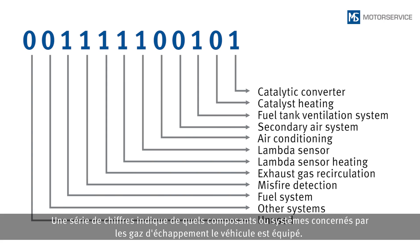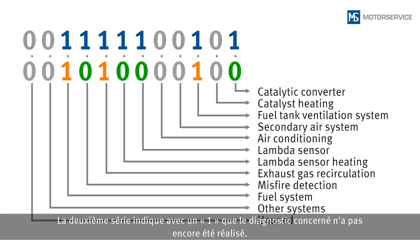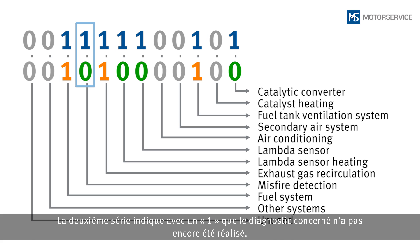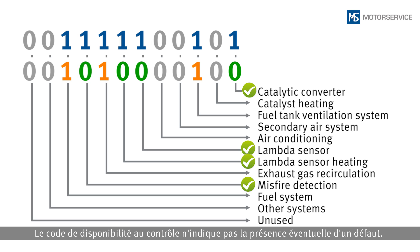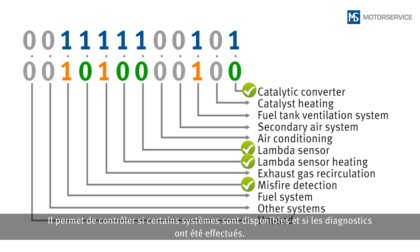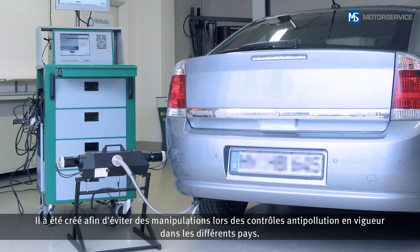One row provides information about which exhaust gas related components or systems are present in the vehicle, indicated by a 1 in the corresponding position. In the second row, a 1 indicates that the applicable diagnostic test has not yet been performed; the value is set to 0 once the area has been tested. The readiness code does not indicate whether errors are present — it purely checks whether certain systems exist and whether their diagnostic tests are finished. It was established to prevent manipulation in country-specific exhaust gas tests.